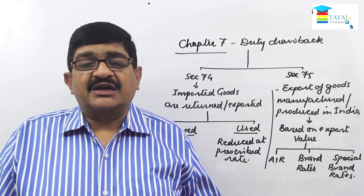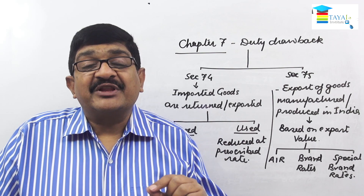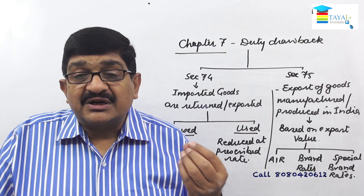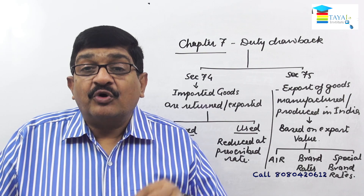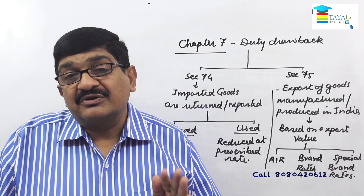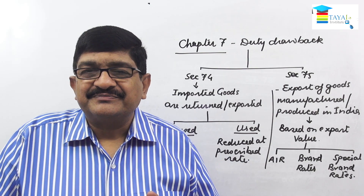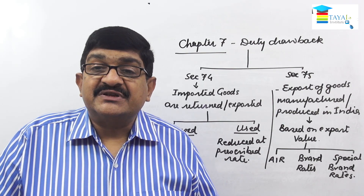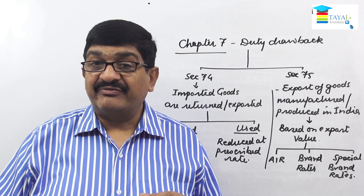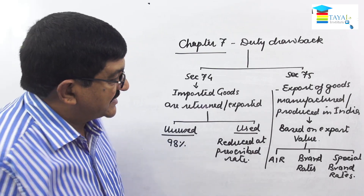Under section 26A, 100% refund is given, unlike section 74 where the maximum is 98%. Section 26A covers the specific situation where imported goods do not meet requirements, are not as per specification, or are damaged. In that case, if goods are returned, exported, destroyed with prior permission of the officer, or transferred in favor of the commissioner within the specified time, full refund of duty is allowed. Other refunds are covered under section 27, including excess amounts paid. The doctrine of unjust enrichment and transfer to the consumer welfare fund are also part of section 27.